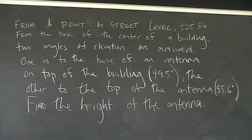Okay, word problem, right triangle application. I'll take a minute to copy this down, I'll read it. From a point at street level, 525 feet from the base of the center of a building, two angles of elevation are measured. One is to the base of an antenna on top of the building, 49.5 degrees. The other to the top of the antenna, 55.6 degrees. Find the height of the antenna.